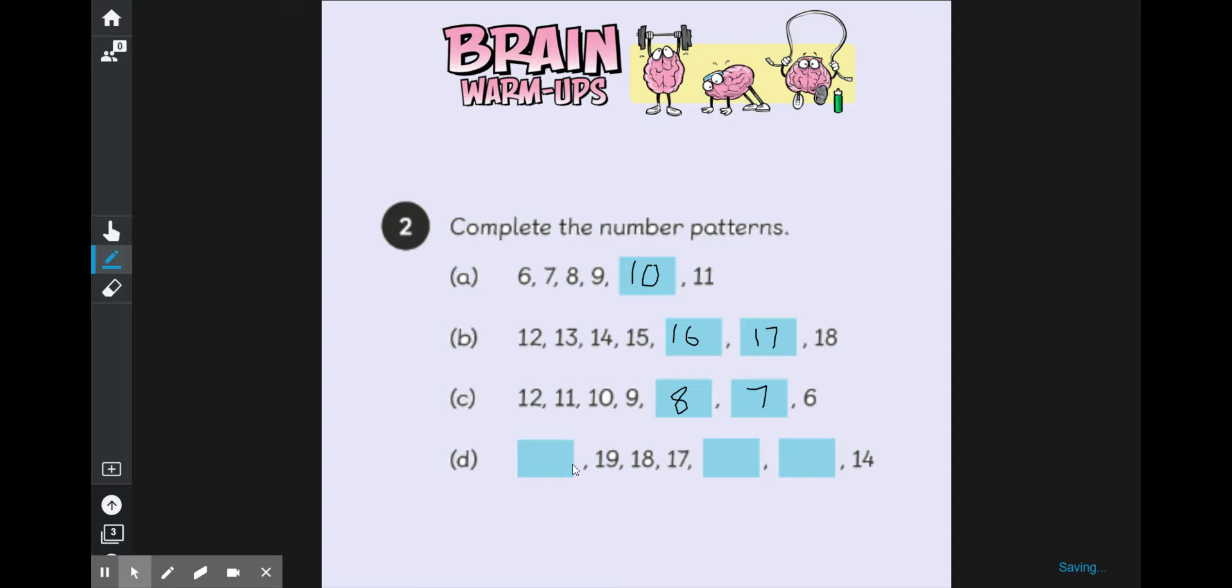And then our final one, 19, 18, 17. See if we're counting backwards again. So 16, 15, 14. And then this one back here, we've been counting backwards. This must be one more than 19. What number is one more than 19? It's our number 2 tens and 0 ones.